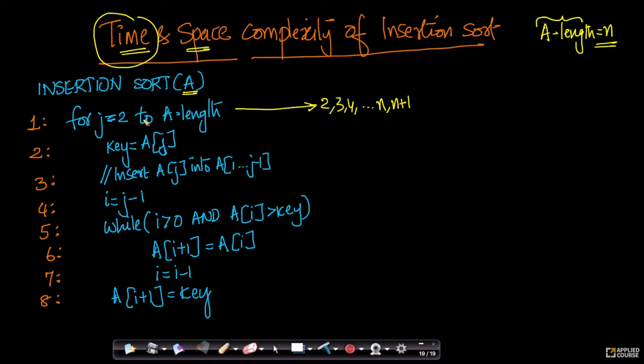So it will go from 2 to 3 to 4 to so on so forth till n+1. When it reaches n+1, we know that n+1 is greater than A.length and will come out of this loop. So how many times did this line get executed? If you just count this, it has been executed n number of times. If you just count how many times this line was executed by my processor.